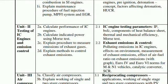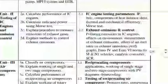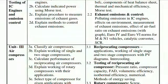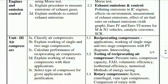Your second unit is Testing of IC Engines and Emission Control. Whenever you manufacture an engine, you have to test different parameters for its actual working. The first point covers IC engine testing parameters: indicated power, BSFC, components of heat balance sheet, thermal and mechanical efficiency, and Morse test. The second point covers exhaust emission and control: polluting emissions in IC engines, effect on environment, measurement of exhaust emission, effect of air-fuel ratio on exhaust emission with graph, Euro 4 and Euro 6 norms for M and N1 vehicles, catalytic converter, and SCR.